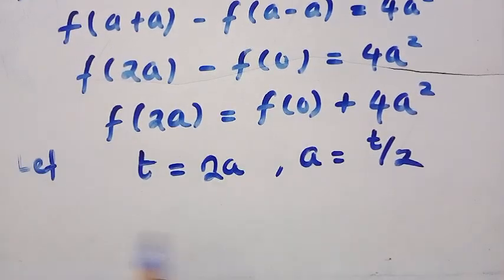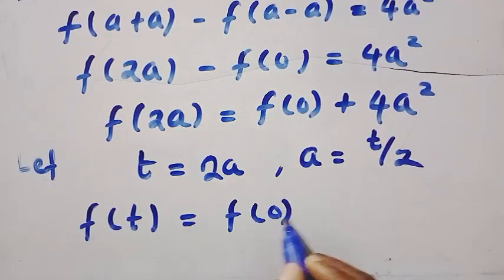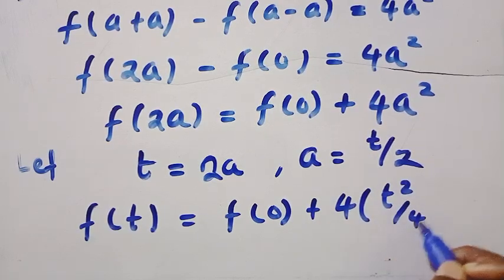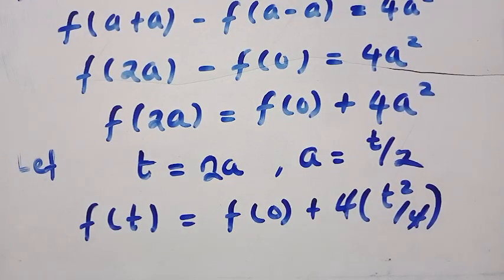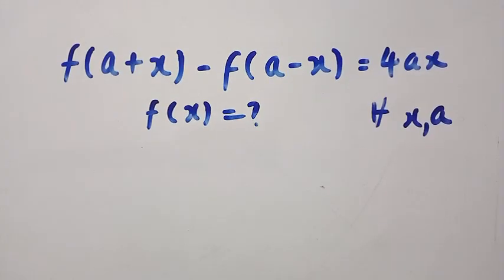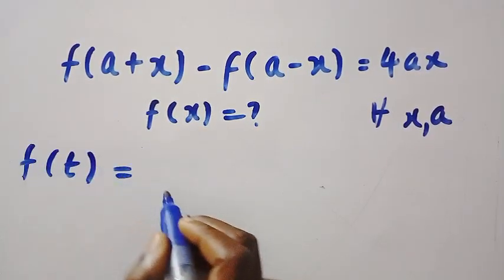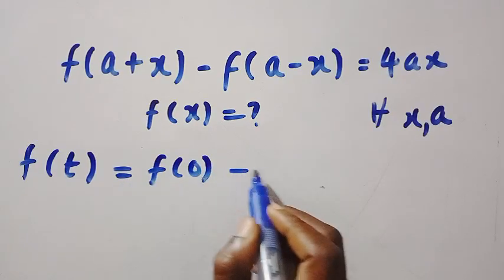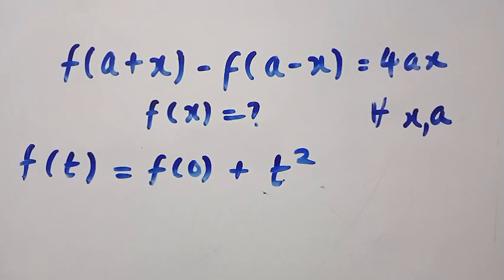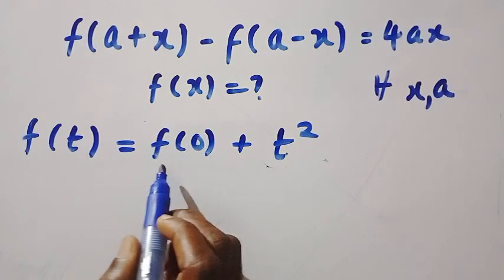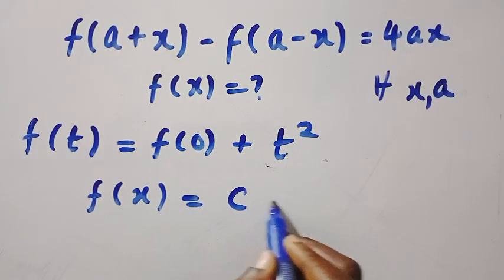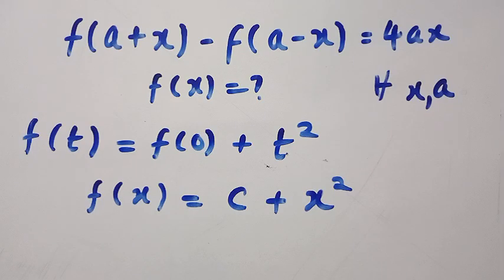Expanding, we get 4 times t squared over 4, so the 4s cancel, giving f of t equals f of 0 plus t squared. Letting f of 0 equal the constant c and replacing t with x, we get f of x equals c plus x squared.